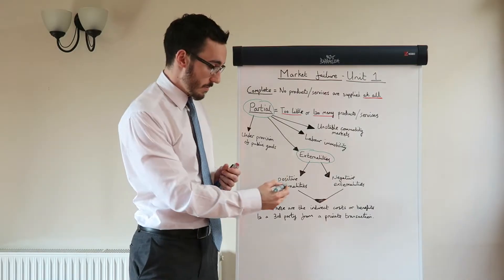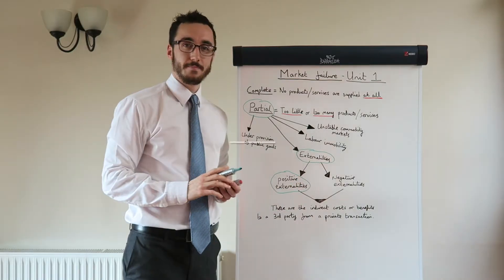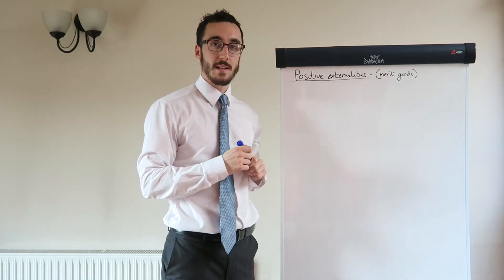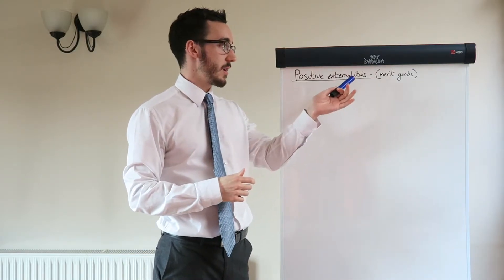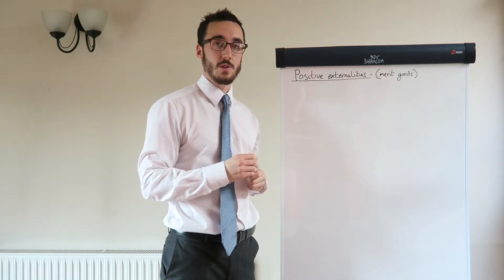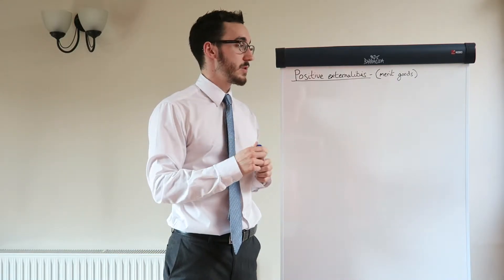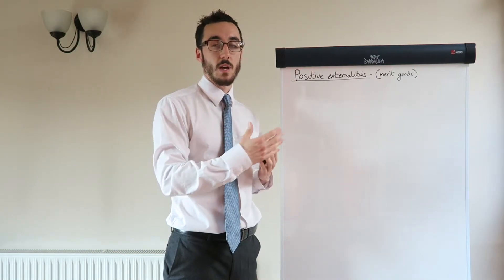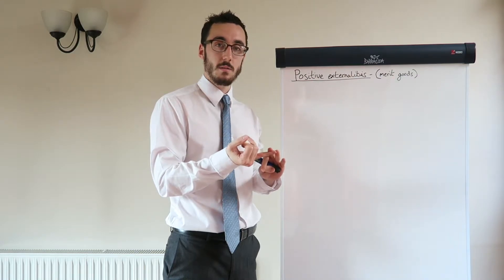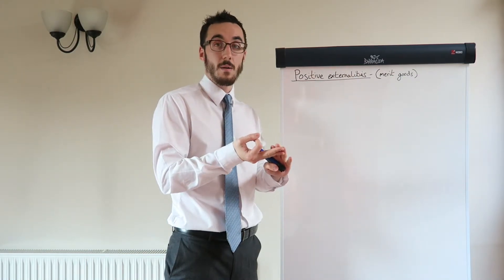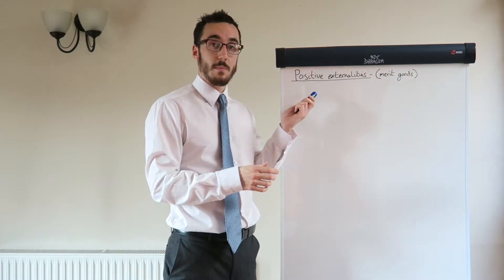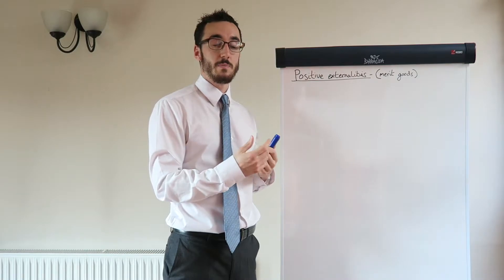The first one we're going to be focusing on is positive externalities. Positive externalities are usually derived from merit goods. These are goods or services that benefit third parties from your private transaction. For example, a good one to use would be going to the gym. I would pay £10 to go to the gym and that would benefit me privately. However, this would also benefit society because me going to the gym, I might get fitter, therefore I might be more productive at work. I might also be healthier, therefore there'd be less cost to the NHS. So all these reasons mean that going to the gym is a merit good and it causes positive externalities — external benefits to society.